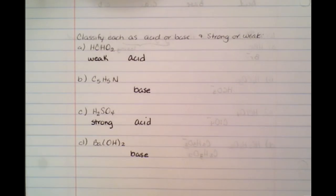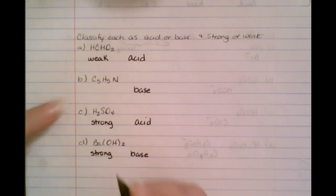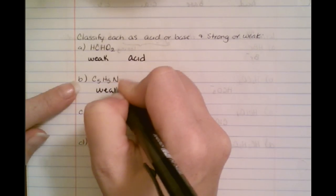Now, remember on our bases, I gave you a Tetris-looking piece that told you what these strong bases were, and this barium one is included in that. This one is not included in group 1A or 2A, so we know that this is a weak base.